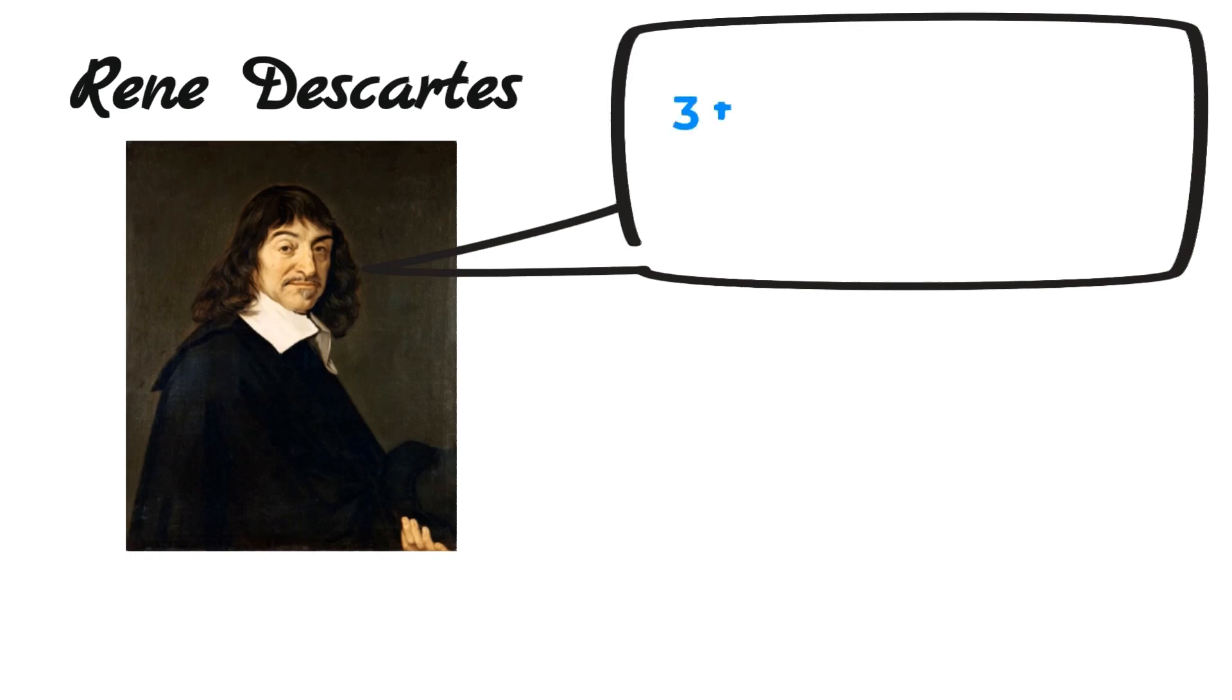And back in his day, math was even more complicated because we used to say 3 times stuff plus 5 equals 7. And that was a lot to write every time. So he had a beautiful light bulb moment and changed stuff into a symbol that's way easier to write. And so he decided we should write it as 3 times X plus 5 equals 7.